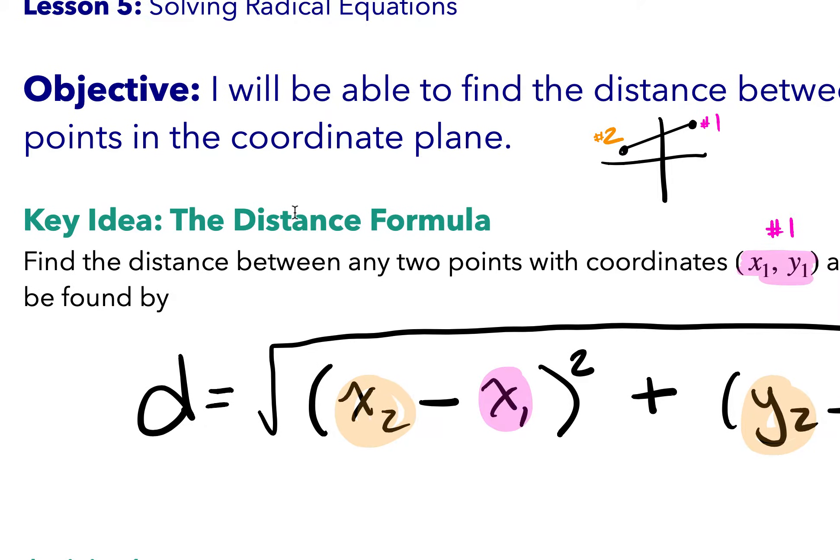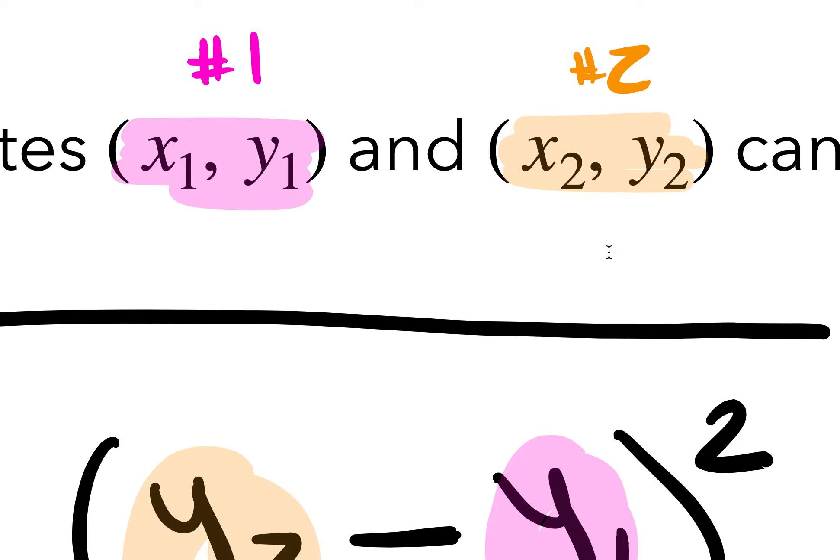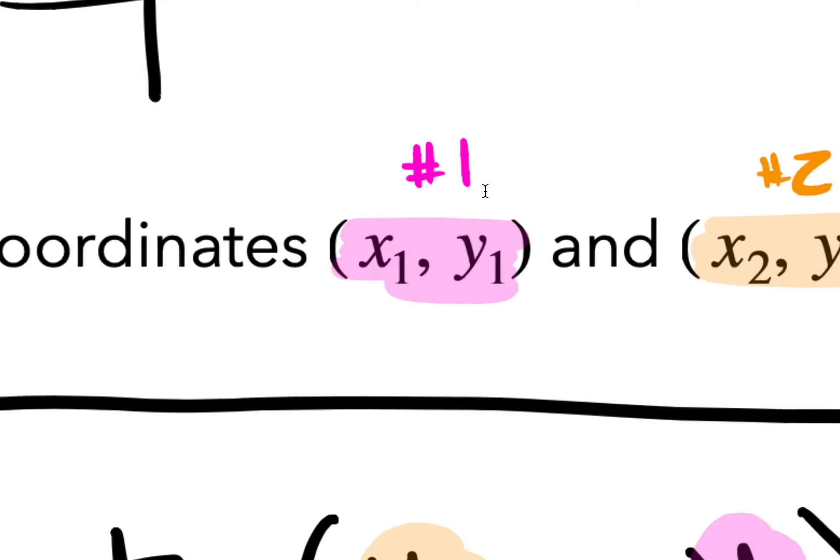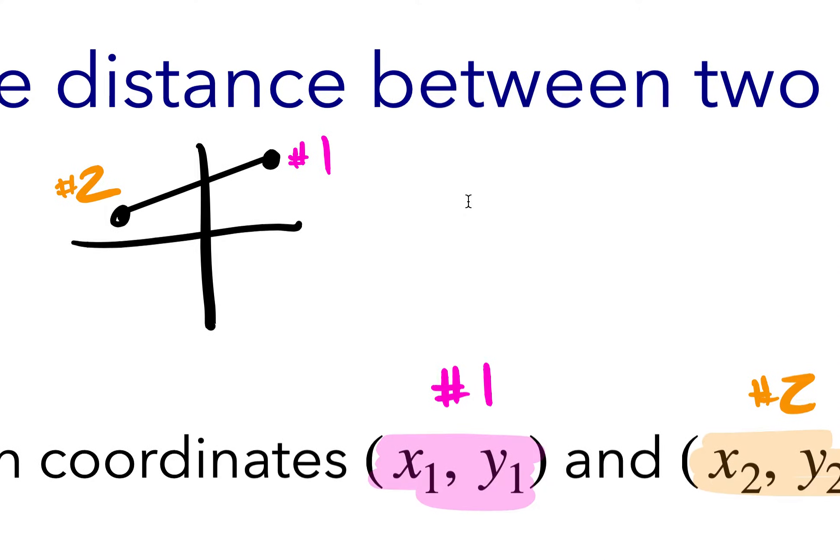Now the distance formula will help you find the distance between any two points by plugging in that information into the formula. So you'll recall that when you go to graph any point, that point has an x value and has a y value. The x tells you how far over to the right you want to go and the y value tells you how far up or down. x is right or left, y is up or down.